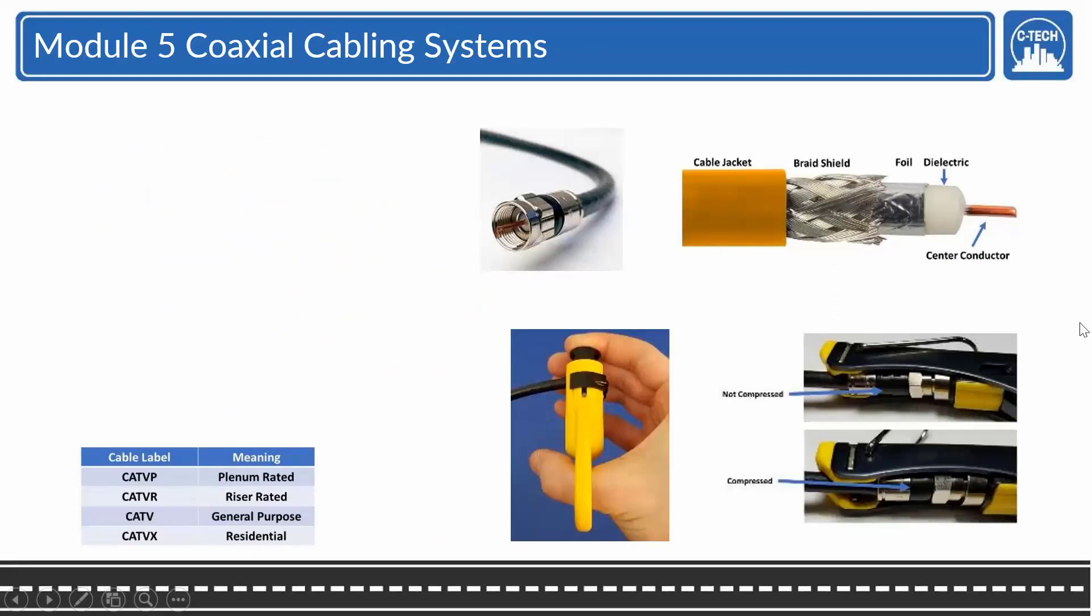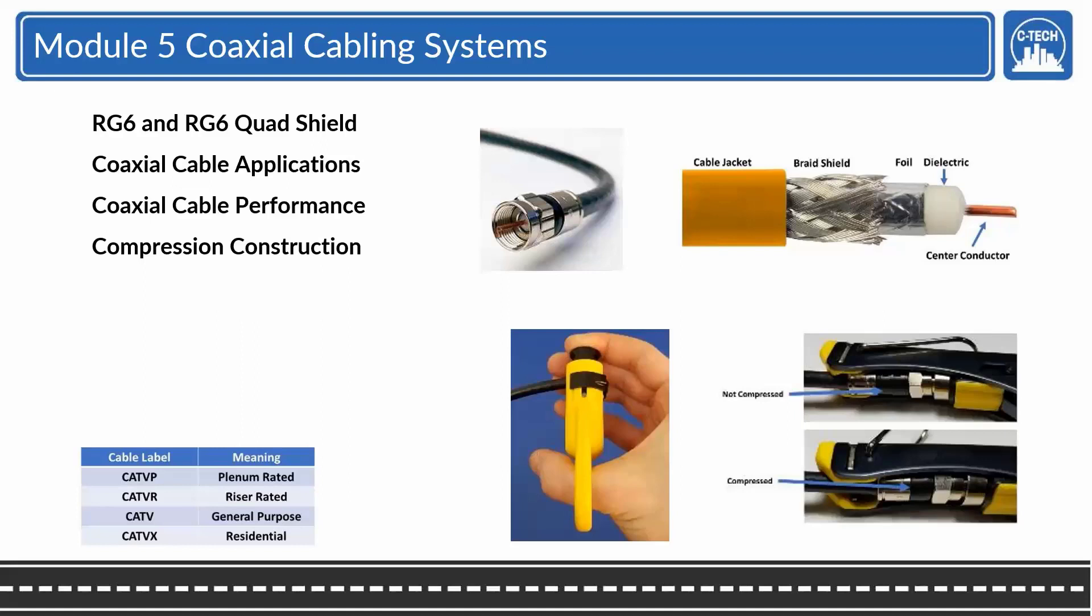Module 5, coaxial cabling systems. We're going to go all through the types of coax - RG6, RG6Q, which is what the standard recommends now. Q being quad shield. The applications, anywhere from baseband to broadband to DAS systems, which require rather thicker cables with N-type connectors. Performance, 75 ohm versus 50 ohm systems.